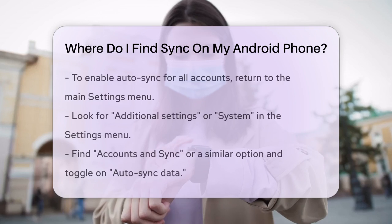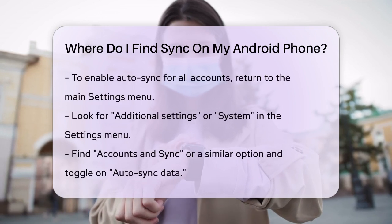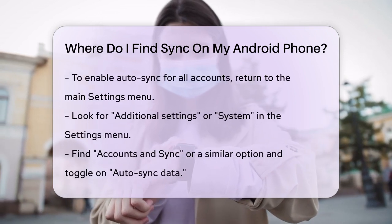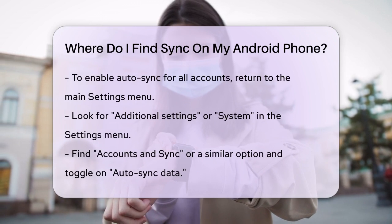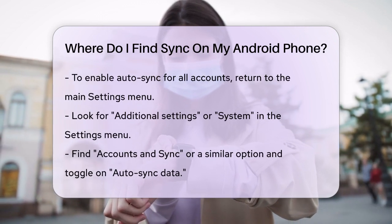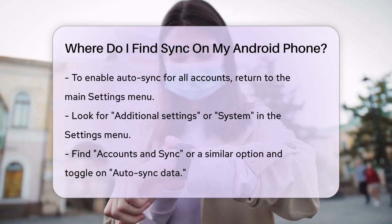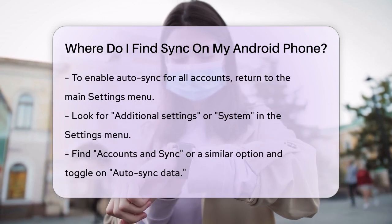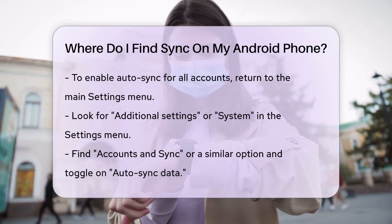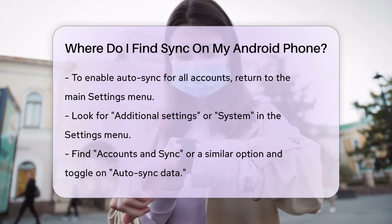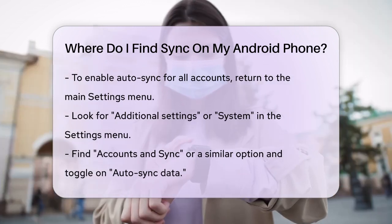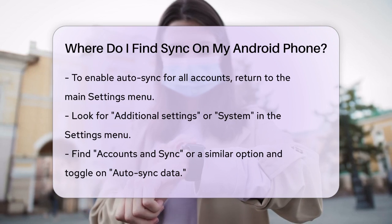If you want to enable Auto Sync for all your accounts, go back to the main Settings menu, scroll down, and tap on Additional Settings or System. Here you might find an option for Accounts and Sync or something similar. Select this and then toggle on the Auto Sync Data option.